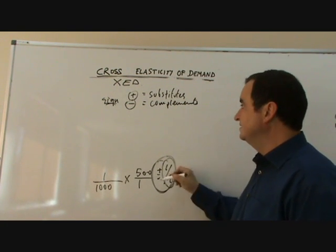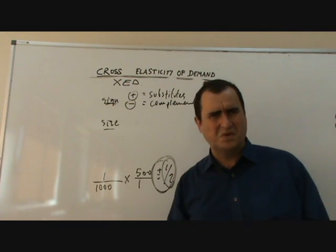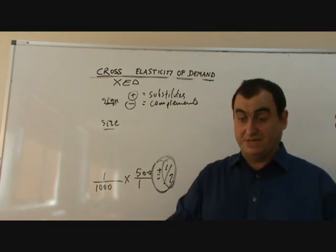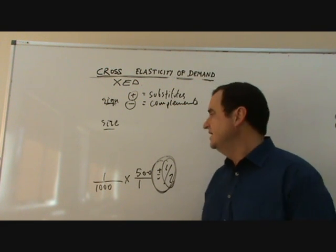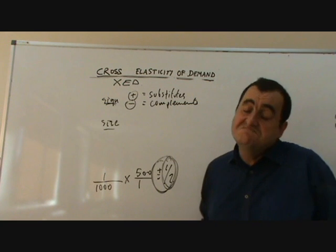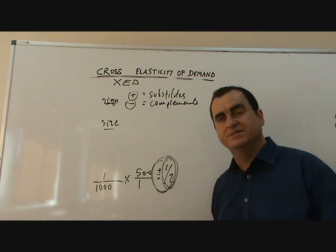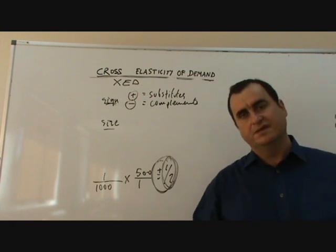Now, the number, that's the size. In this case, it's a half. Size, you know, with other elasticities, bigger or smaller than one, is really important. Here, we just say, how big is the number? Half is a medium size. It's quite a strong relationship. You see, the size of the number tells us about the strength of the relationship.